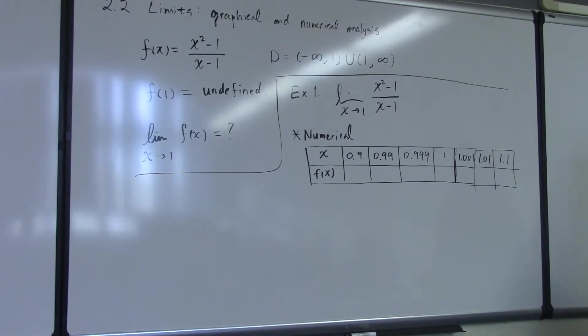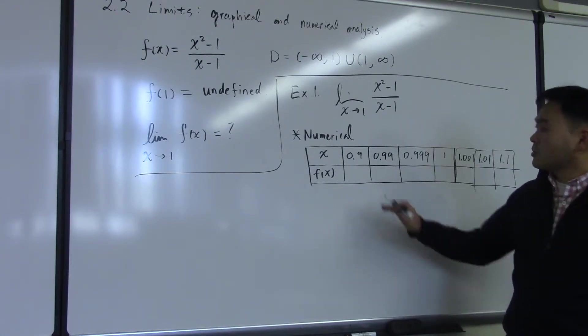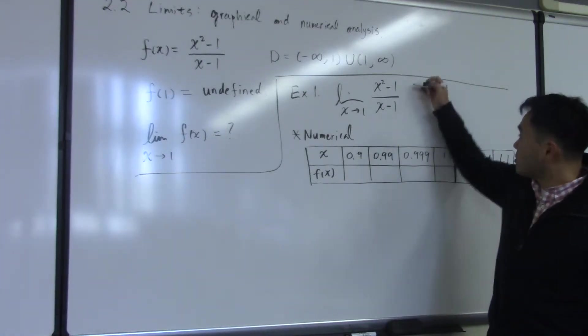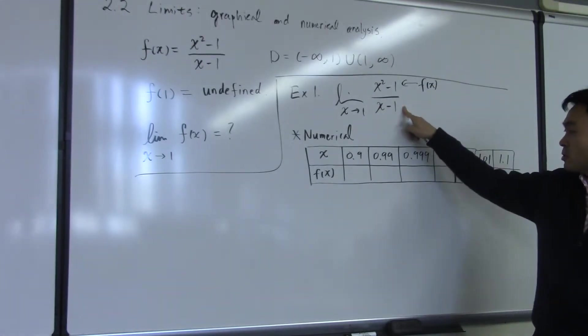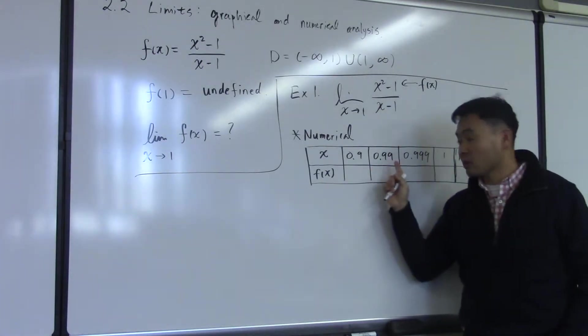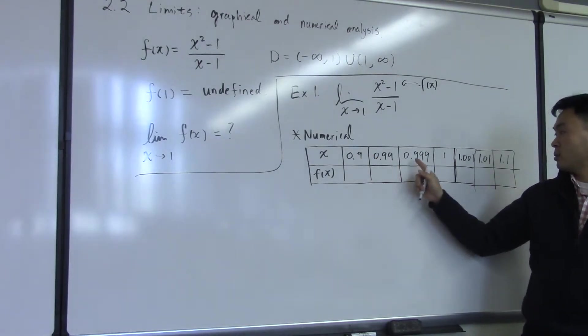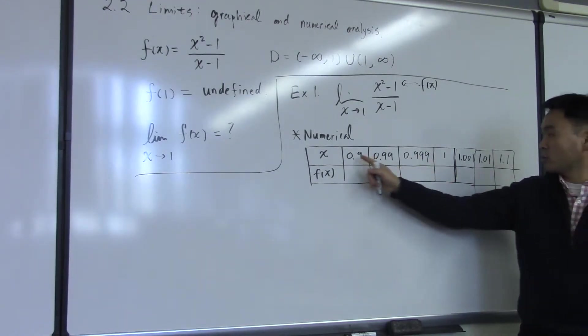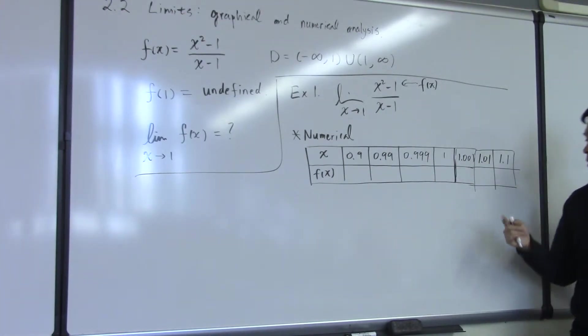All right. So what I want you to think about is try to evaluate the function. This is your f of x. Try to evaluate this function as x gets closer and closer to 1. Say 0.9, 0.99, 0.999. These values get closer and closer to 1 from the left, right?